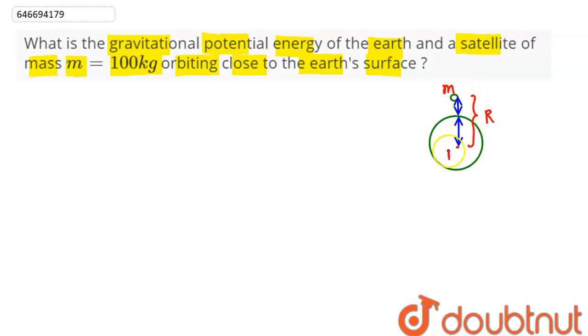This is small m mass, this is capital M mass. So h plus R is approximately equal to R, as it says close to earth's surface. So h and R sum is approximately R.